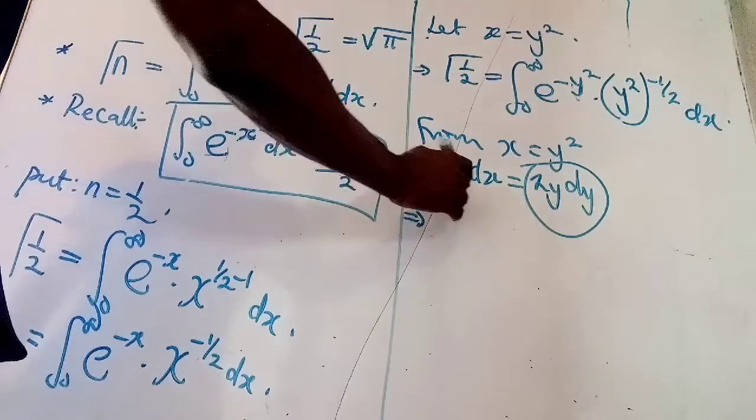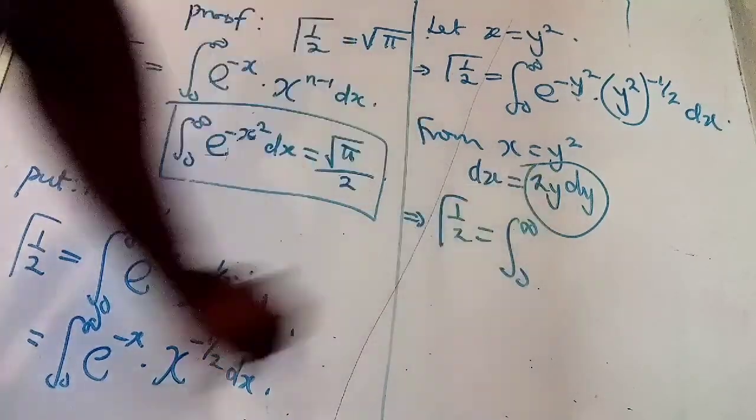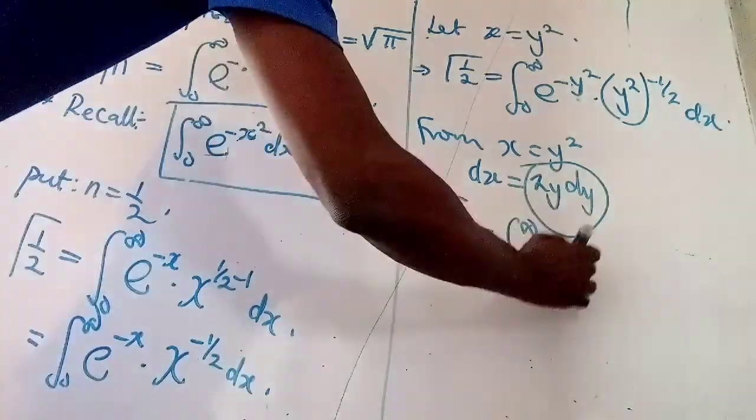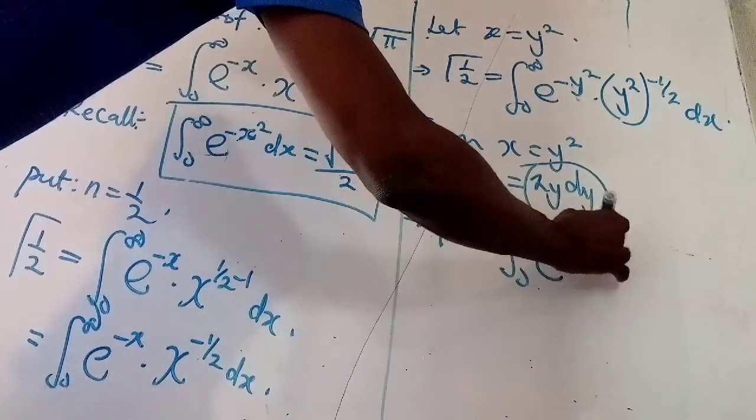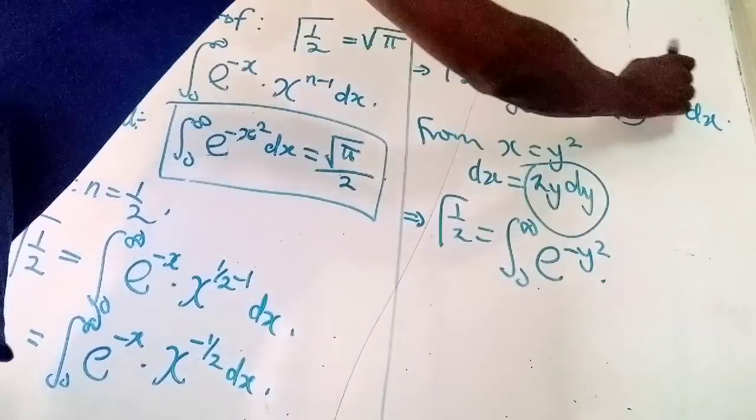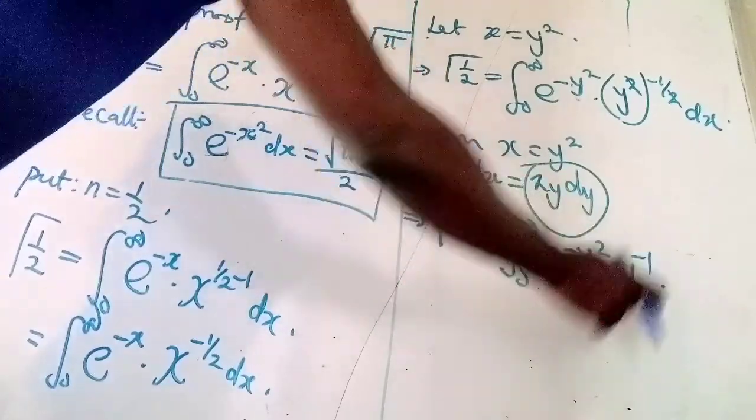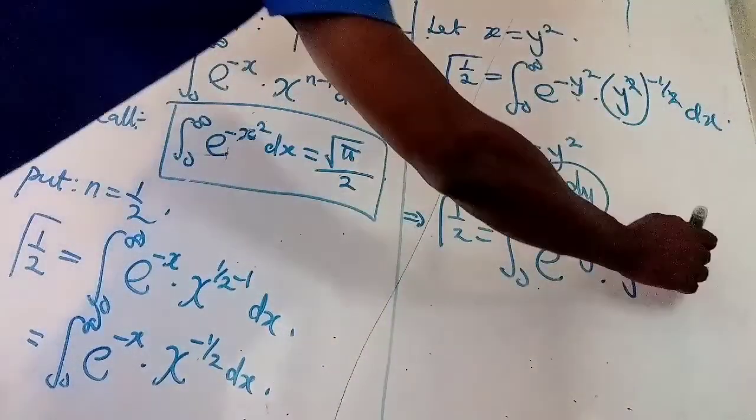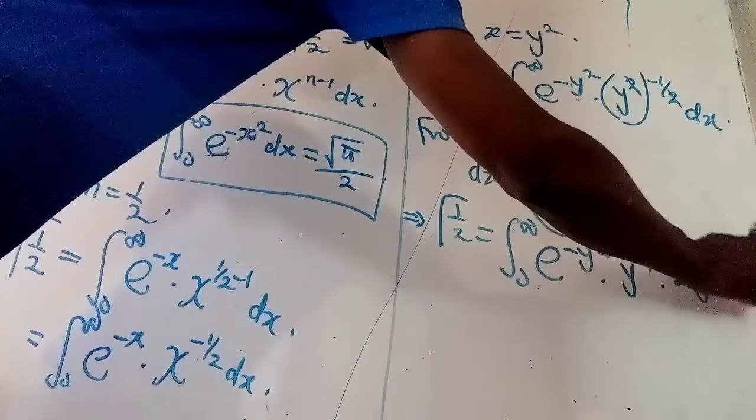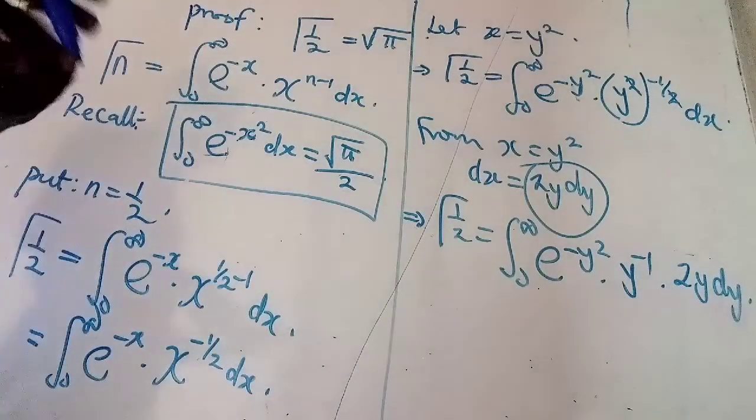So, I will have gamma of half equals integral from 0 to infinity e to negative y squared, multiply by, these two we cancel. That will now be y raised to power minus 1. Multiply by, instead of writing dx, I will write 2y dy. You can see that everything now is in the form of variable y.